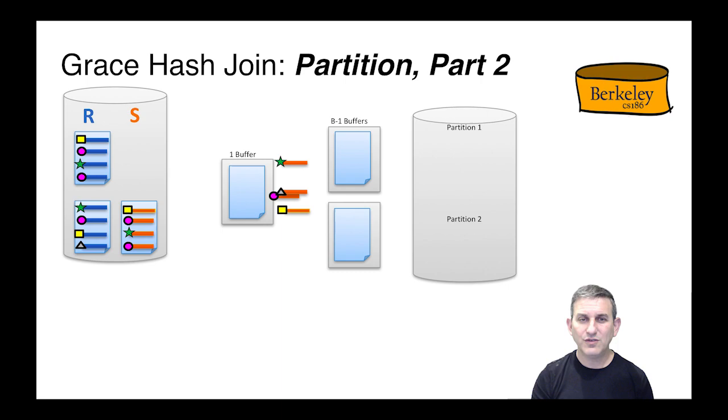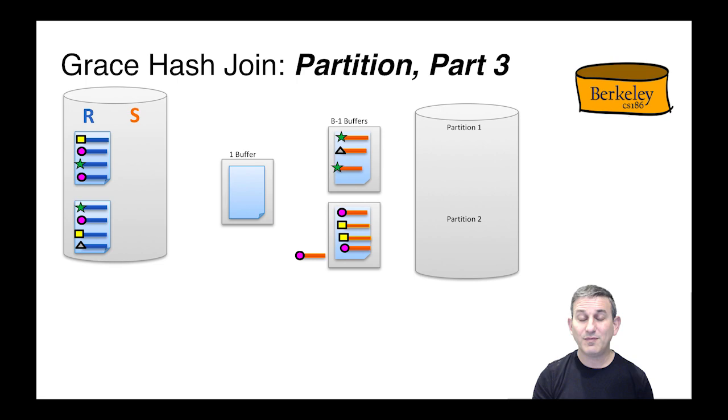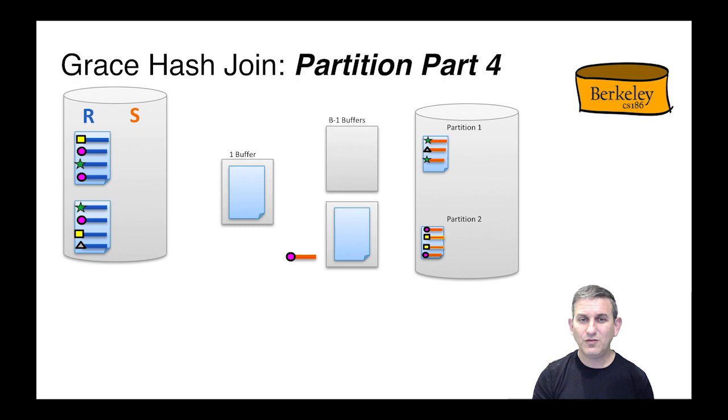First, we're going to partition S. We read in a page of S and use the hash function to put its tuples into output buffers. We read another page of S and use the hash function again to put its tuples into output buffers. You can see that if tuples match, they end up in the same partition. When buffers fill, we push them to disk and generate new buffers as needed, and we spill them to disk as well. We've partitioned S.